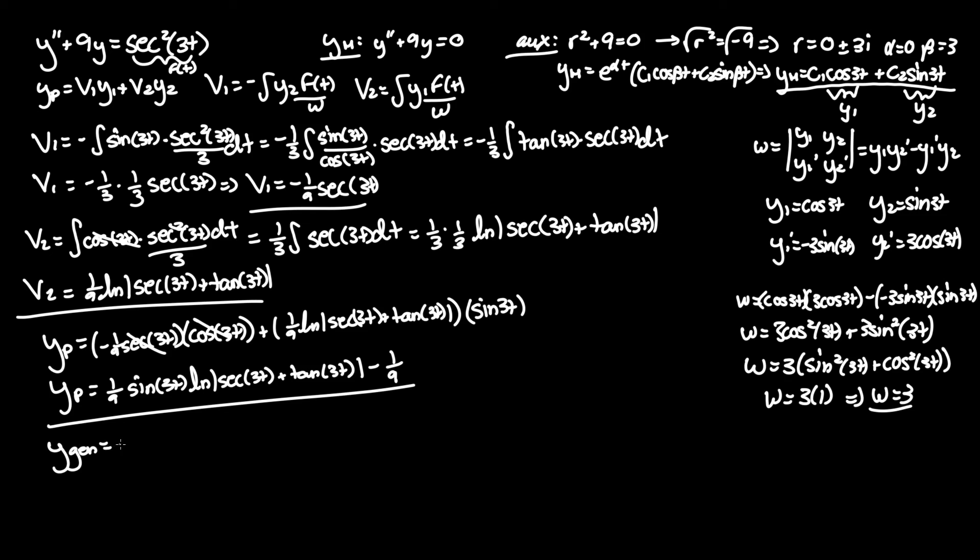So for y-general, as you know, it equals yh plus y-particular. We just have to add both our solutions now. So looking here for our yh, I'll star that. c1 cosine of 3t plus c2 sine of 3t plus this whole term minus one ninth. And that is our answer.